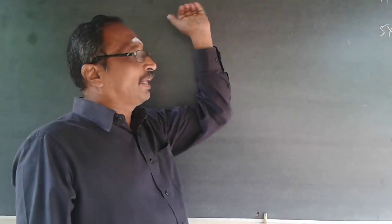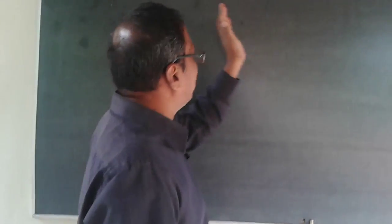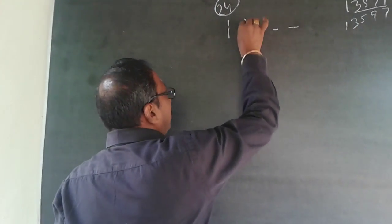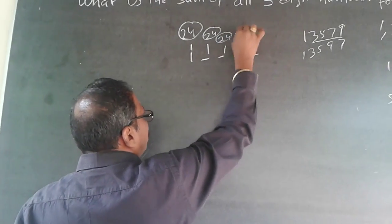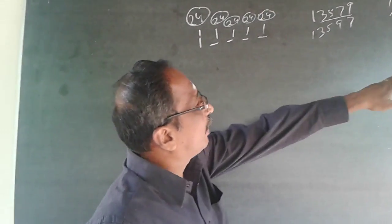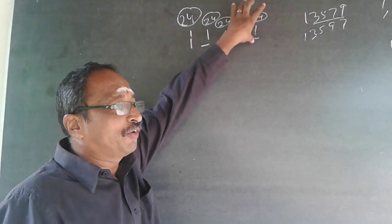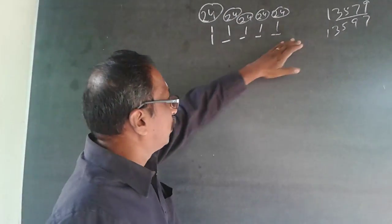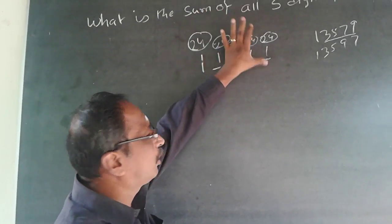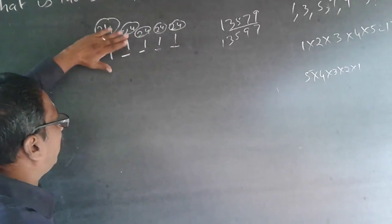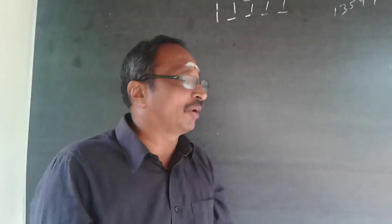The contribution of 1 in the 10,000s place alone will be 1 × 10,000 × 24 = 2,40,000. Similarly, 1 will also be in the 1,000s place 24 times, hundreds place 24 times, tens place 24 times, and units place 24 times. In total that accounts for all 120 numbers — each digit appears in every place exactly 24 times.